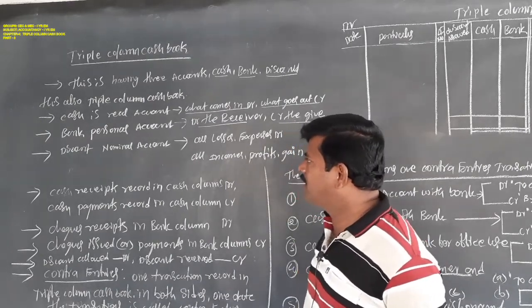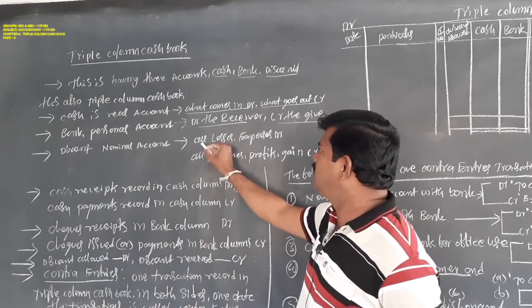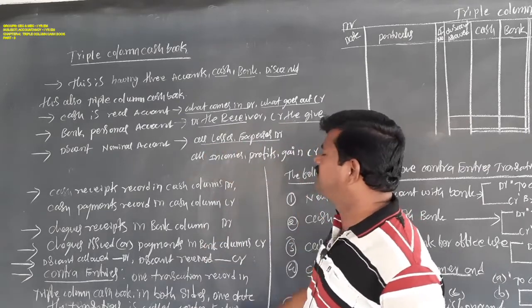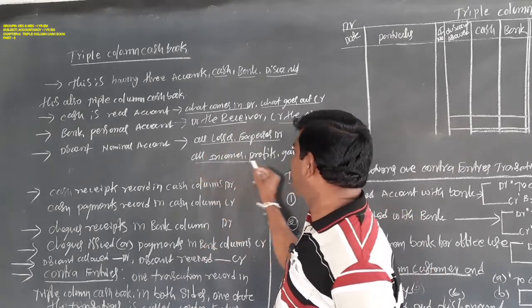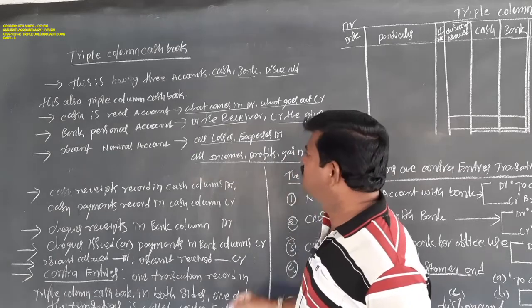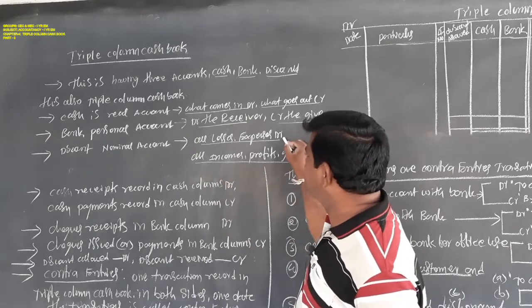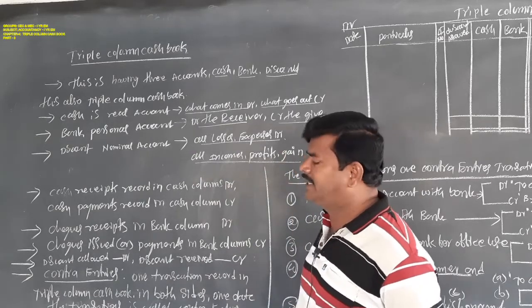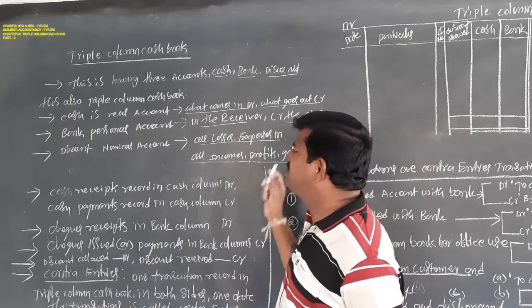Discount is a nominal account. All losses and expenses, debit; all incomes and profits, credit. So discount allowed is on the debit side. Discount received is on the credit side.